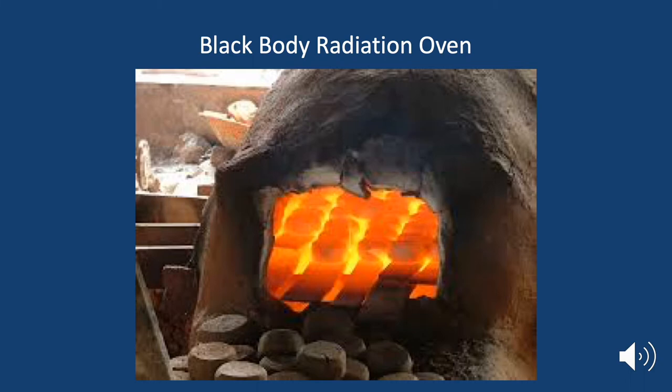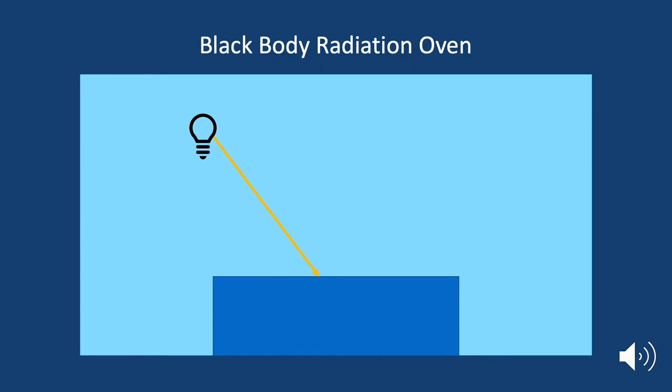But first of all, some revision. When light is incident on an object, the object can reflect the light away. Alternatively, the object can transmit the light through, or the light might be absorbed by the object, and that light energy might become kinetic energy in the particles of the object.